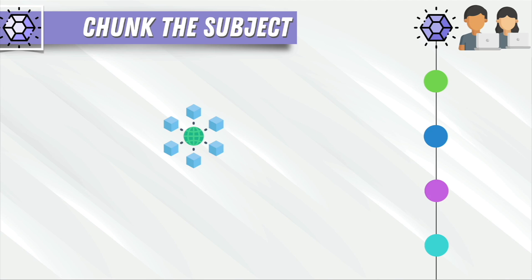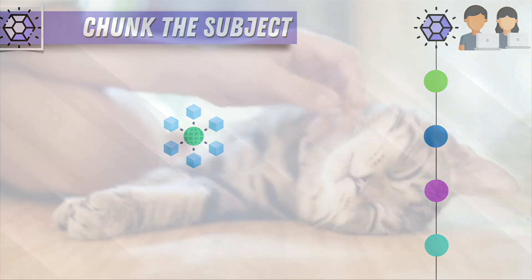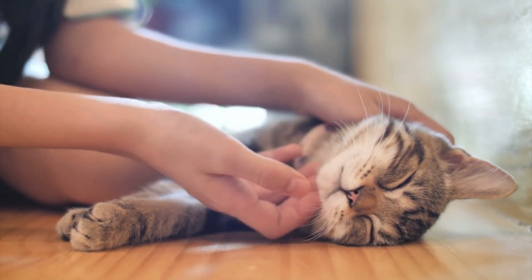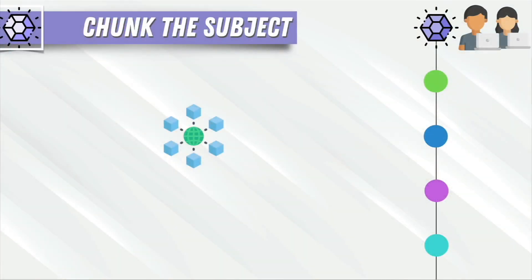This idea of chunking is what makes our brain run more efficiently. Every time I look at the word 'cat', I don't have to remember each individual letter. Because we've chunked that knowledge and put it into long-term memory, we can immediately combine the letters and form the cat image in our head — you don't need to remember all the details. This doesn't apply just to words.